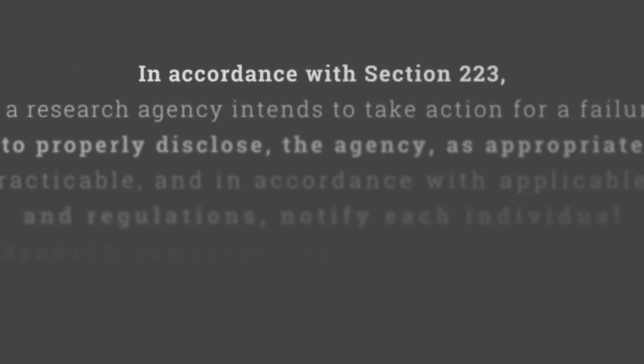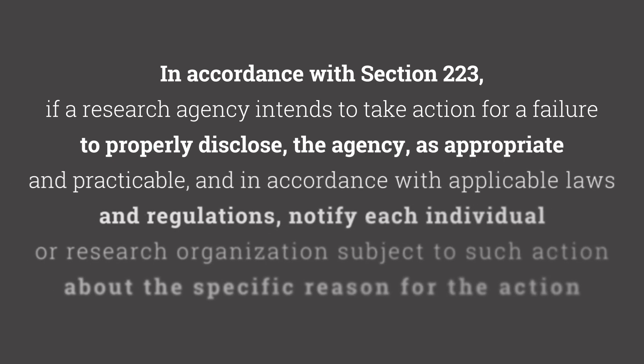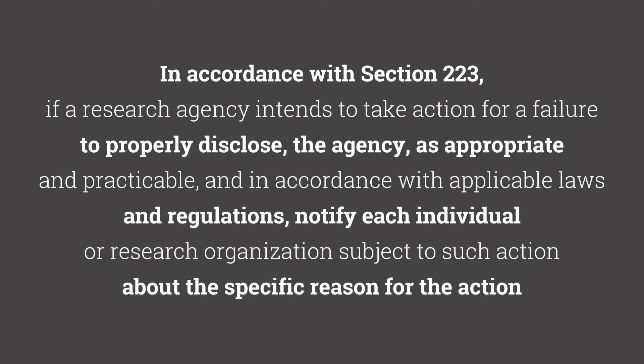Notably, the guidance indicates that there should be some element of due process in an enforcement action. Specifically, the guidance states that in accordance with Section 223, if a research agency intends to take action for failure to properly disclose, the agency — as applicable and appropriate and in accordance with applicable laws and regulations — must notify each individual or research organization subject to the action about the reason for the action. Further, it must provide the individual or entity with the opportunity to, and a process by which it may, contest this action.